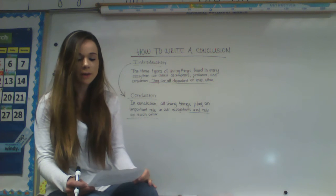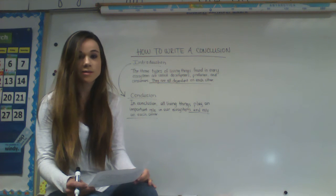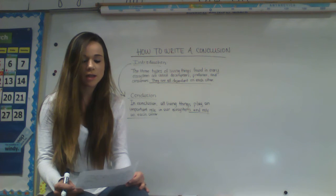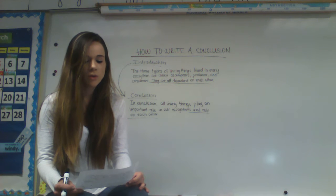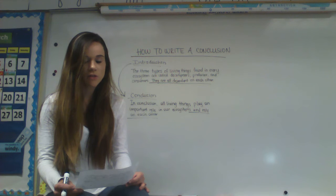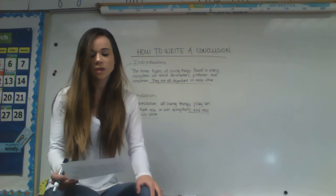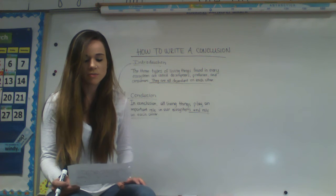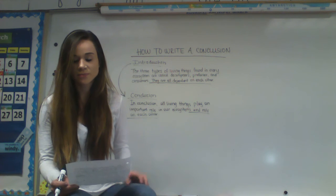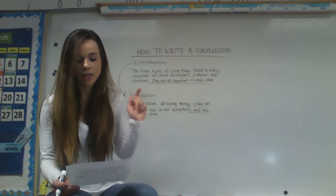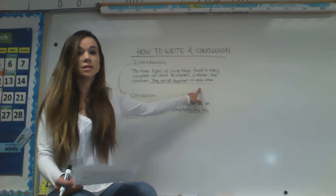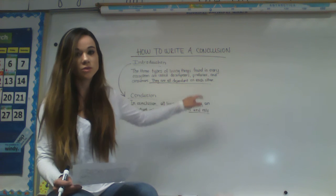Have you ever thought about how many living things there are on this planet? Well, that is exactly what ecology is — it is the study of all living things. Whether you are playing in your backyard or looking for seashells at the beach, you will find yourself in different ecosystems. The three different types of living things found in every ecosystem are called decomposers, producers, and consumers. They are all dependent on each other. That's the sentence that I added, and you'll see why.